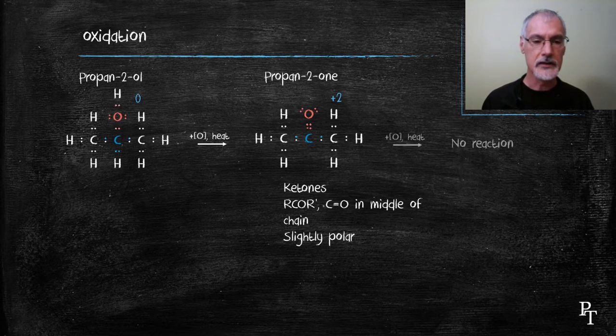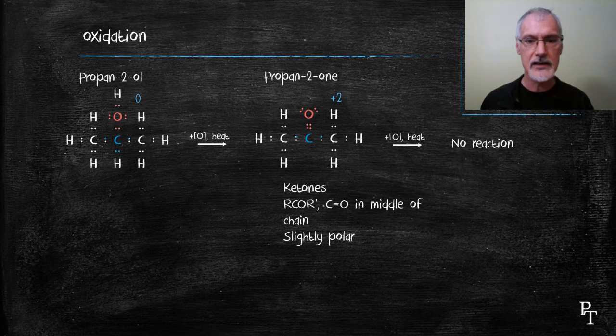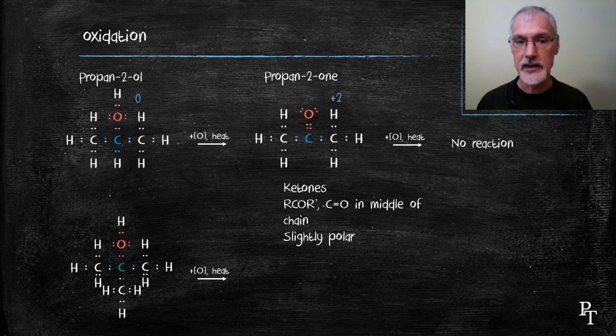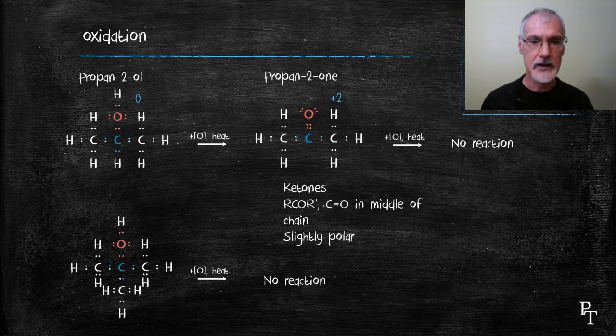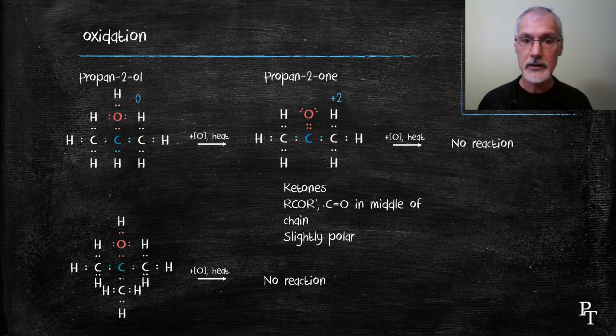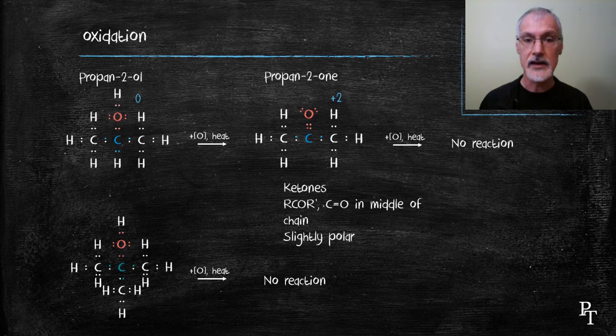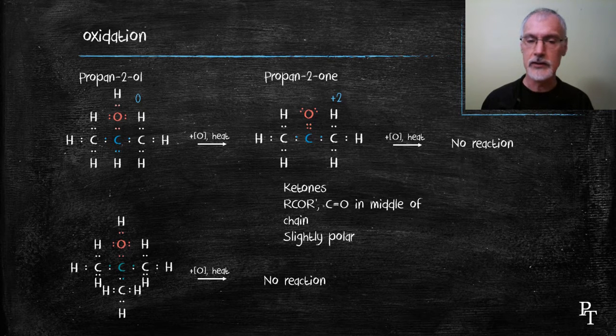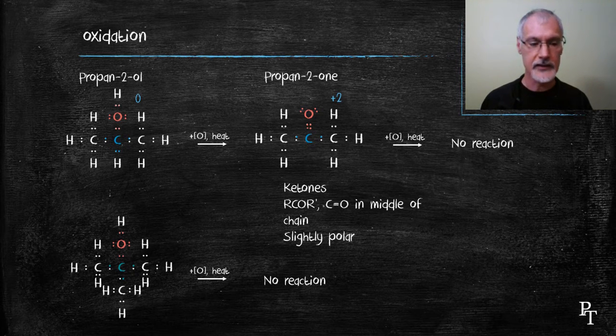If I bring along and try to oxidize it further, I'll get no further reaction. I can't oxidize this any further. If I begin with a tertiary alcohol and try to oxidize it, the process stops there. These don't oxidize. So to summarize, my primary alcohols can be oxidized into two compounds, aldehydes and eventually carboxylic acids. Secondary alcohols can only be oxidized into ketones, and tertiary alcohols can't be oxidized.